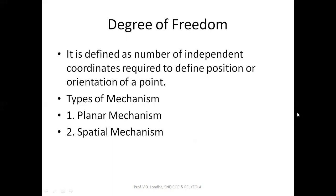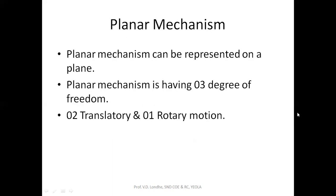There are two types of coordinates: space coordinates and planar coordinates. Depending upon the coordinate system, there are two types of mechanisms — planar mechanism and spatial mechanism. A planar mechanism is one that can be represented on a plane using planar coordinates, and these mechanisms have three degrees of freedom: two translatory motions and one rotary motion.